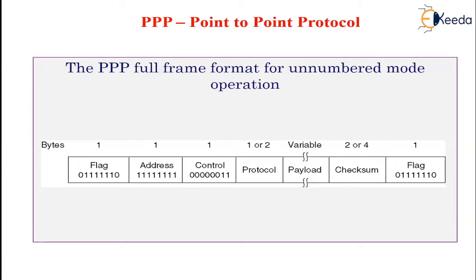To see how these pieces fit together, consider a typical scenario of a home user calling an internet service provider. The PC first calls a provider's router via a modem. After the router's modem has answered and established a physical connection, the PC sends the router a series of LCP packets in the payload field of one or more PPP frames. These packets and their responses select the PPP parameters to be used. Once parameters are agreed upon, a series of NCP packets are sent to configure the network layer, and the PC becomes a full internet host able to send and receive IP packets.